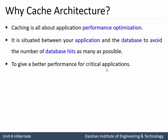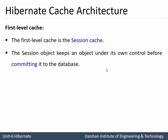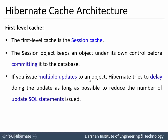The first level cache is mandatory while the second level cache is optional. Regarding the significance of first level cache: this cache is known as session cache. The session object keeps an object under its own control before committing it to the database. If a query is being performed, the transaction will not go to the database until it is committed or the flush method is called. If you issue multiple updates to a particular object, Hibernate will delay the update as long as possible to reduce the number of update SQL statements issued.